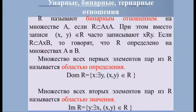Множество всех первых элементов пар из R называется областью определения отношения R и обозначается dom R. Множество всех вторых элементов пар называется областью значения отношения R и обозначается im R. Отношения задаются так же, как и множества — перечислением или указанием свойств. Пример: пусть X = {a, b, c, d}, Y = {1, 2, 3, 4, 5}. Тогда множество кортежей α = {(a,1), (b,2), (c,3), (d,4)} является отношением.